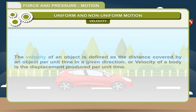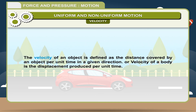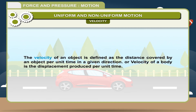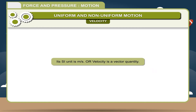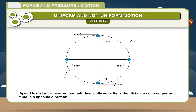Velocity: the velocity of an object is defined as the distance covered by an object per unit time in a given direction. Or, velocity of a body is the displacement produced per unit time — that is, velocity equals displacement divided by time. Its SI unit is meter per second. Velocity is a vector quantity. Speed is the distance covered per unit time, while velocity is the distance covered per unit time in a specific direction.